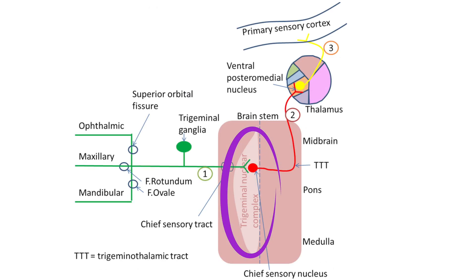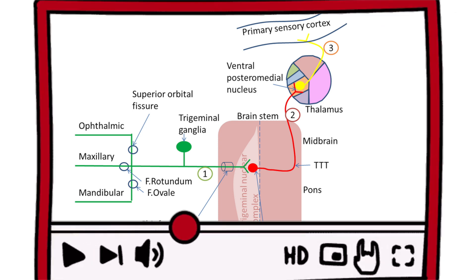Ascending projections via the trigeminal thalamic tract transmit information to the thalamus and other brain regions responsible for interpreting sensory information. We have separate videos on this that will be linked at the end of the video so go check them out.